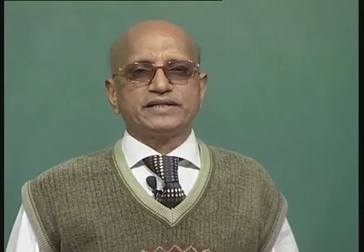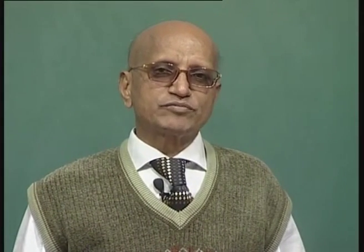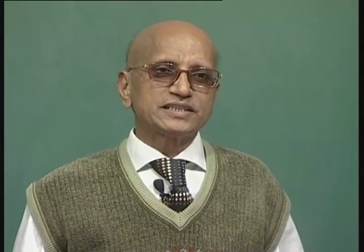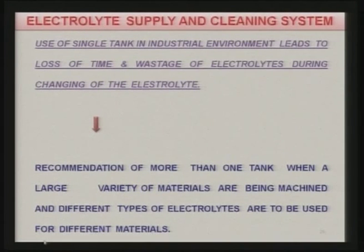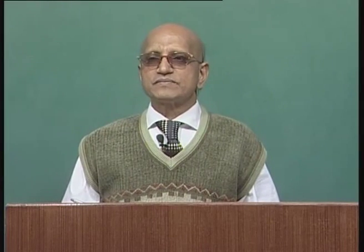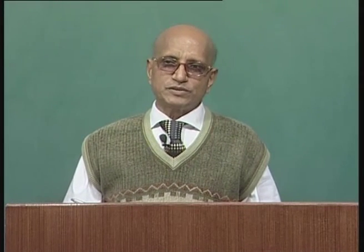There are various kinds of anode materials from which work pieces are made, and for different materials you may require different types of electrolyte. In that case you have to waste the existing electrolyte and fill the tank with new electrolyte. To avoid wastage and minimize time, many medium and large scale industries prefer to have more than one tank, where different tanks store different types of electrolyte. This gives higher productivity and is economical when a large variety of materials are being machined.